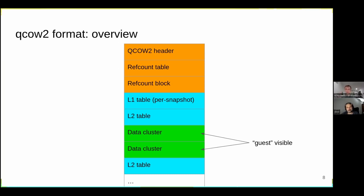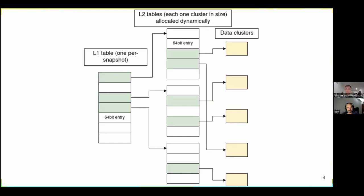It's worth mentioning that refcounters are used for L1 tables, L2 tables, and data clusters for snapshot needs. Here we can see the general scheme of mapping between cluster virtual addresses at the block device level and the offsets inside the image. The L1 and L2 tables are indexed by splitting the virtual cluster address into parts: the first part indexes into L1, the second part gives the offset in L2, allowing navigation to find the particular cluster.